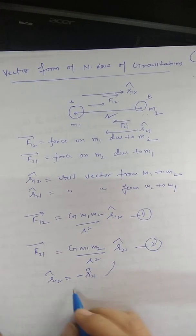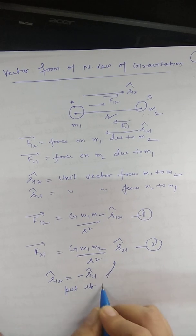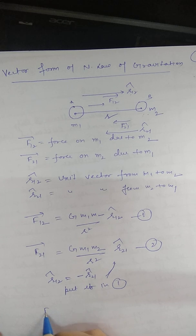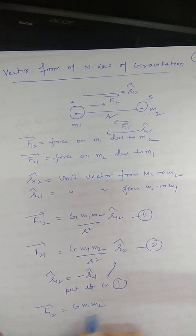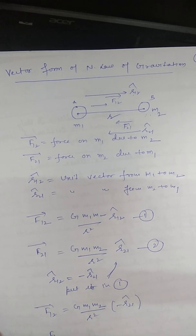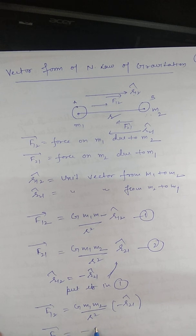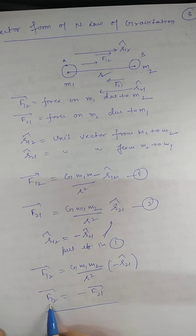So F12 is equal to GM1 into M2 divided by R square minus r21 cap. It becomes F12 is equal to minus F21.